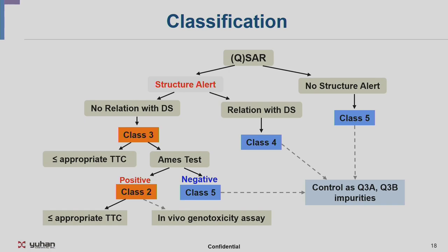With QSAR, we can classify impurities as follows: without a structural alert — Class 5; with a structural alert and a relationship with the DS — Class 4; structural alert but no relation with DS — Class 3. If the Ames test shows no mutagenicity — Class 5; if the Ames test is positive — Class 2. For Class 4 and 5, ICH Q3A and B apply.